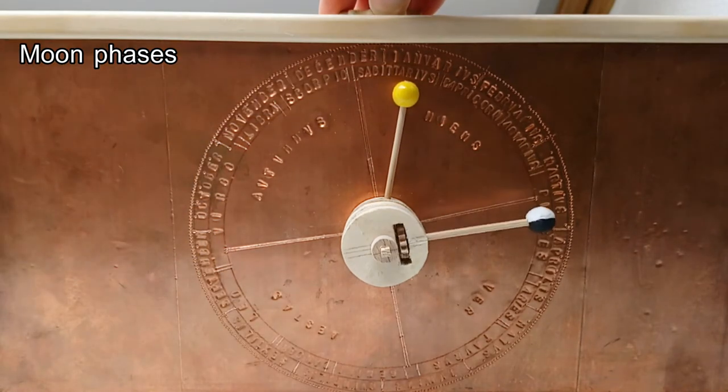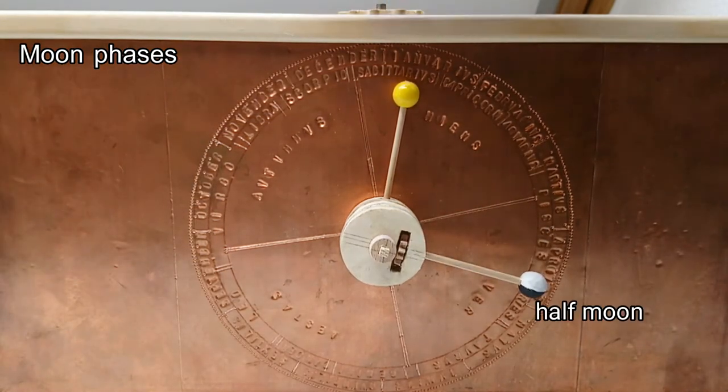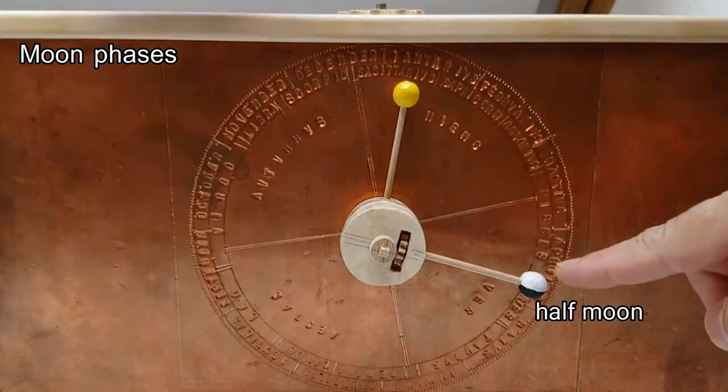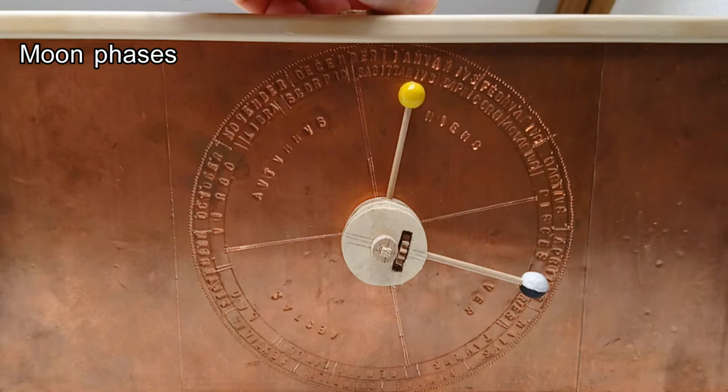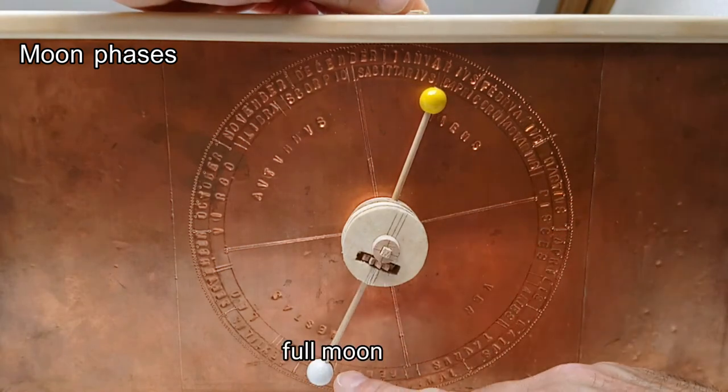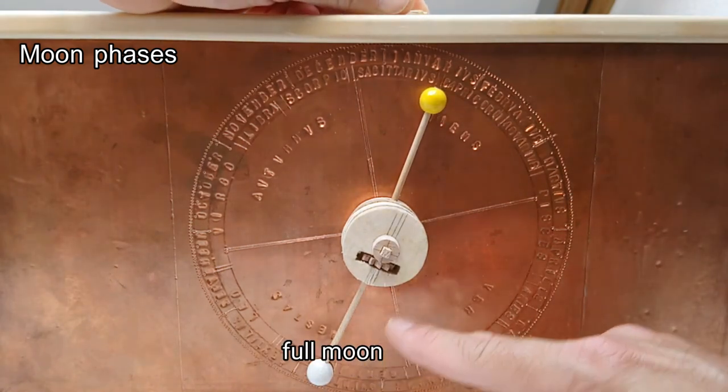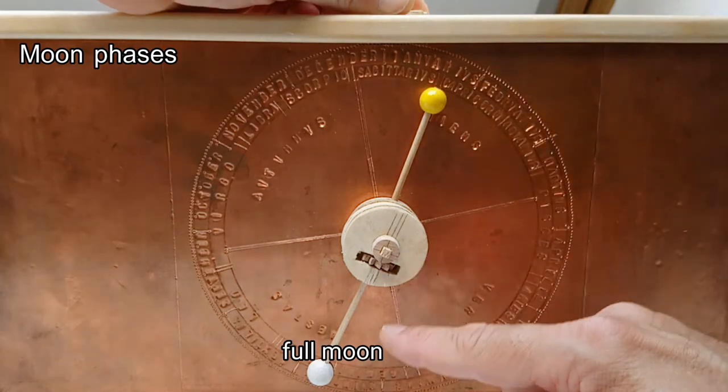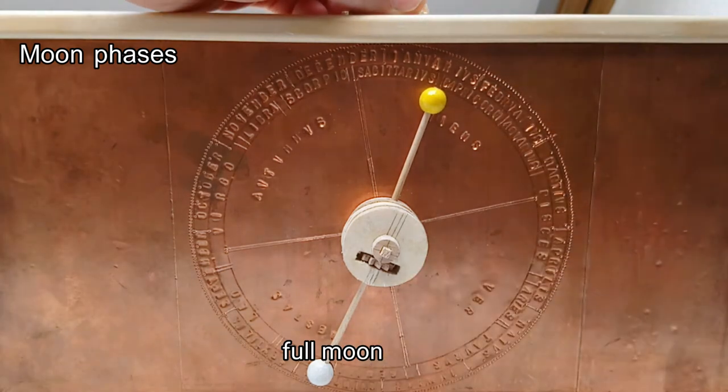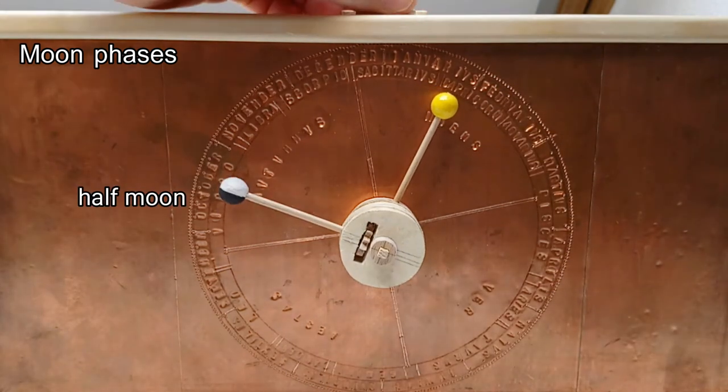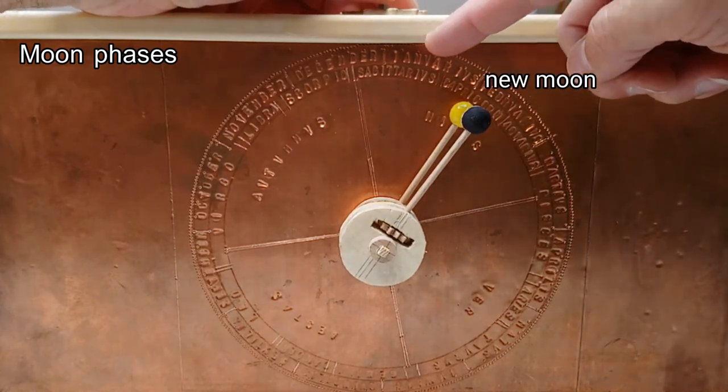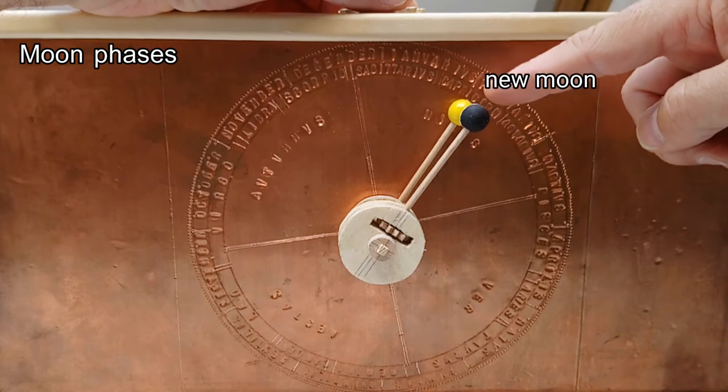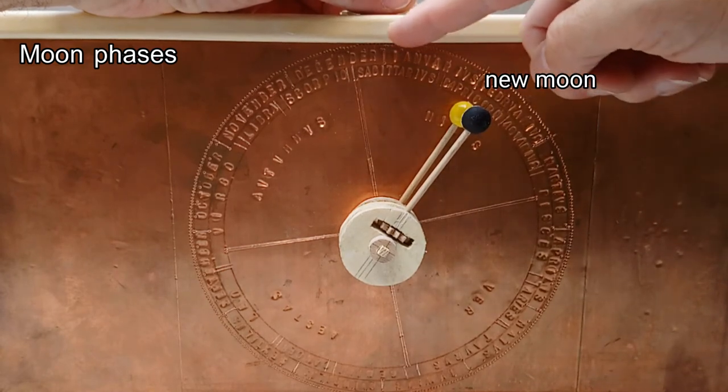One week further we have a half moon. The sun only moved a bit but the moon is three zodiac signs further. After another week we have a full moon. The moon is exactly opposite the sun. Then again half moon and then again new moon. One month has passed now. Sun and moon are both one zodiac sign further than at the beginning.